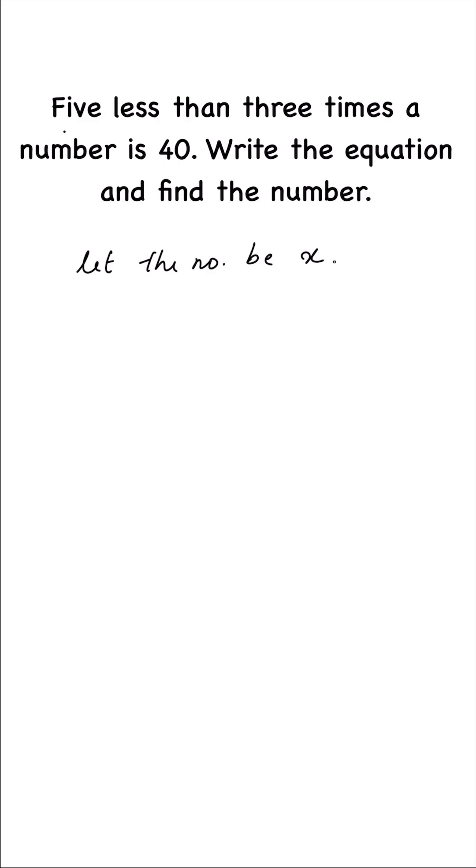Now let's frame the equation. Five less than three times a number, so three times means three times the number. The number is x, so three times x is 3x. We get 3x, and five less means from 3x we'll subtract 5. So this is five less than 3x.